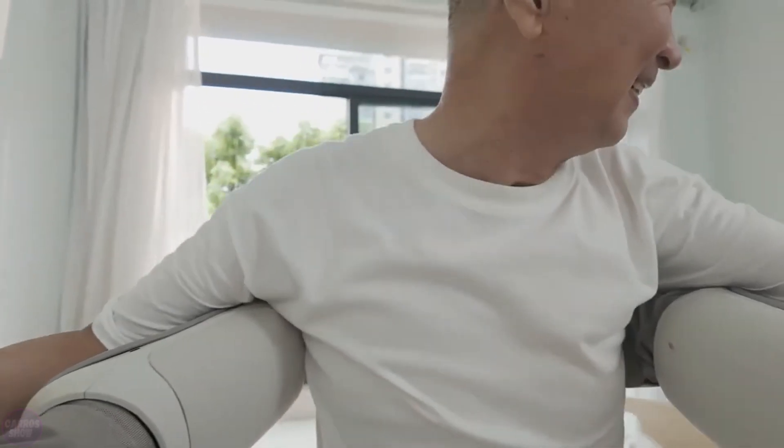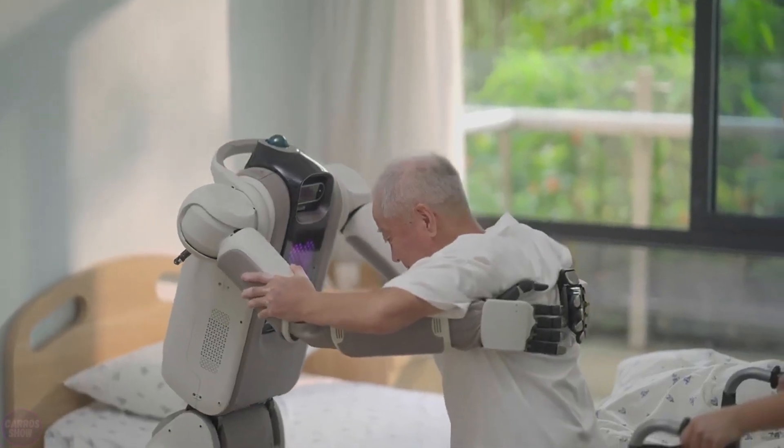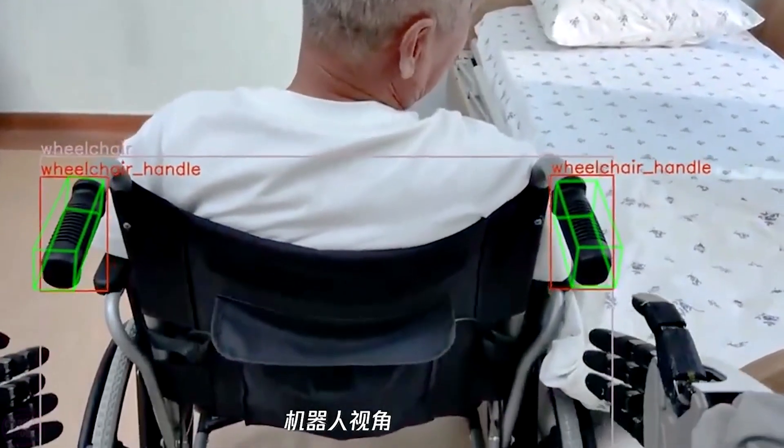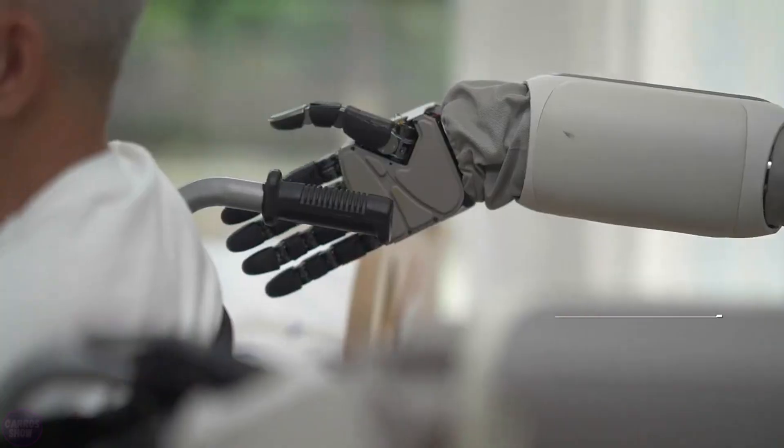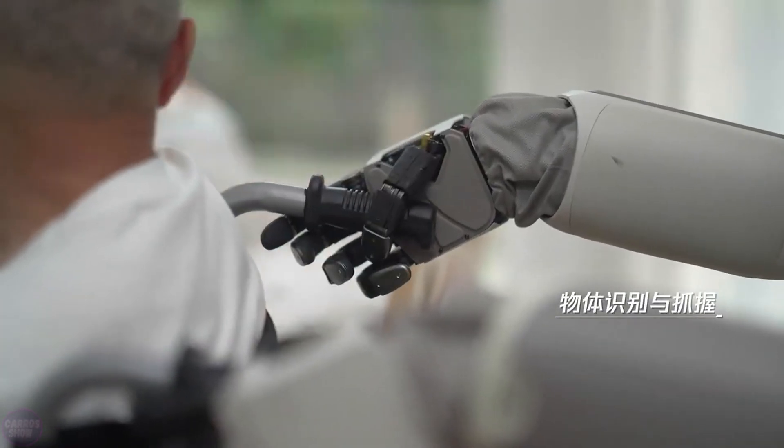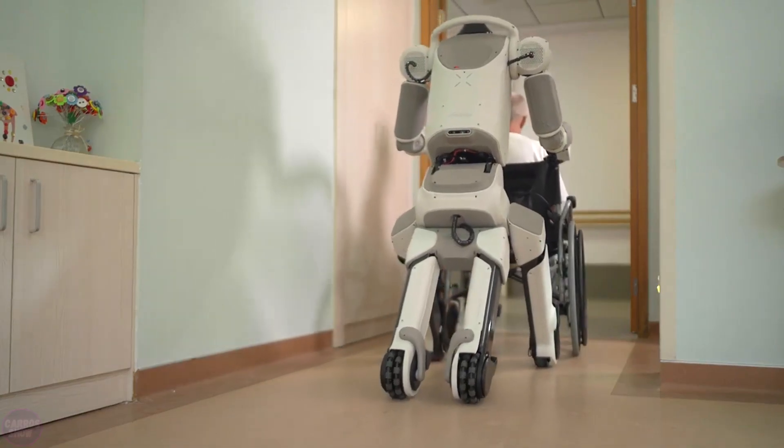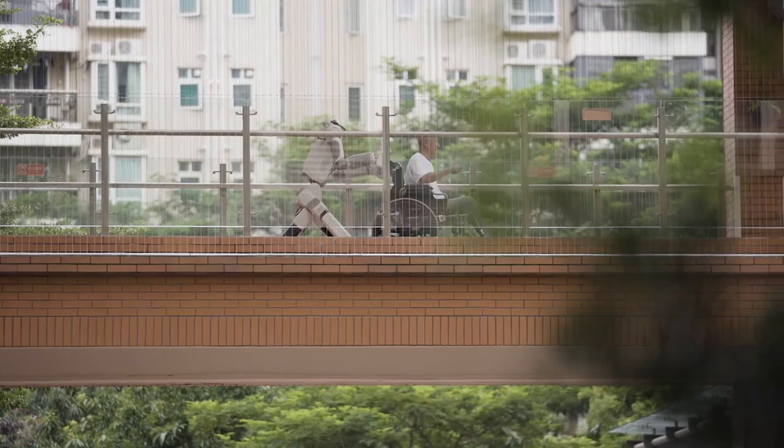One of the key aspects of the robot is its ability to safely physically interact with people. It can support and move elderly individuals, helping them stand up or move around. Additionally, the robot is equipped with powerful motors that enable it to lift heavy loads, such as boxes or even people.